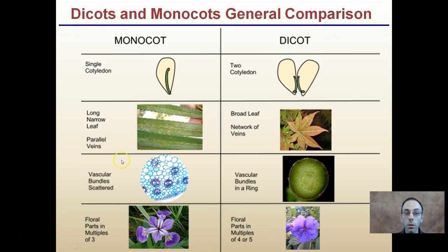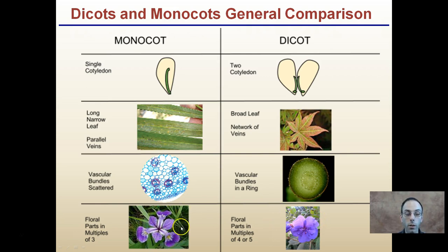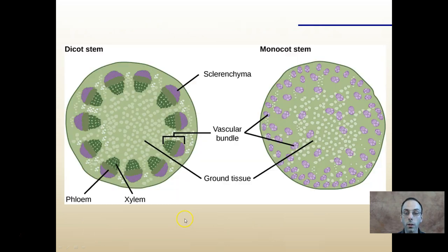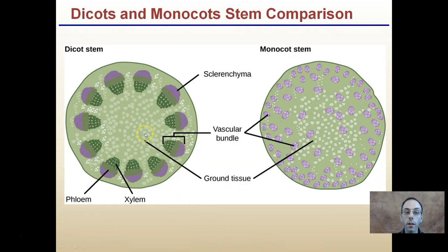Bringing in some real-world images, you can see again how those leaves may look. Dicots can be much more varied. It shows the microscopic image of the scattered vascular bundles indicative of monocots, and the distinctive rings evident for dicots, and the floral parts — four or five multiples for dicots, or typically three for monocots. That stem organized in a ring here is the dicot. This is what I mean by scattered — you can see there might be a little more concentration toward the perimeter, but overall relatively scattered throughout the stem.